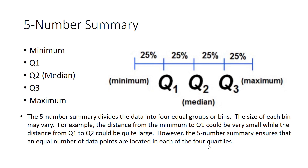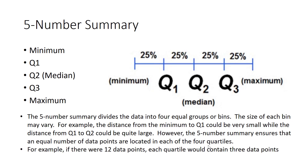For example, let's suppose we had twelve data points. Twelve divided by four is three, so that would mean we would have three data points in each of the four quartiles. The 25% refers not to the range of values, but to the number of data points contained in each quartile.